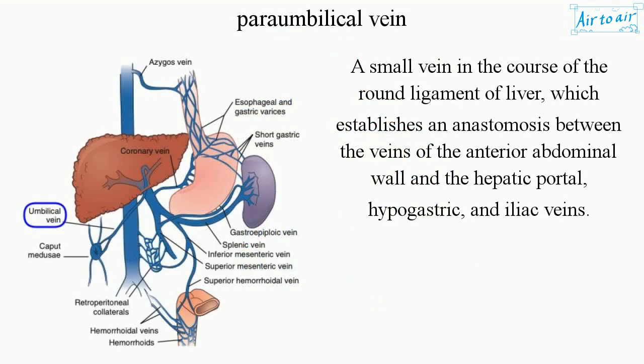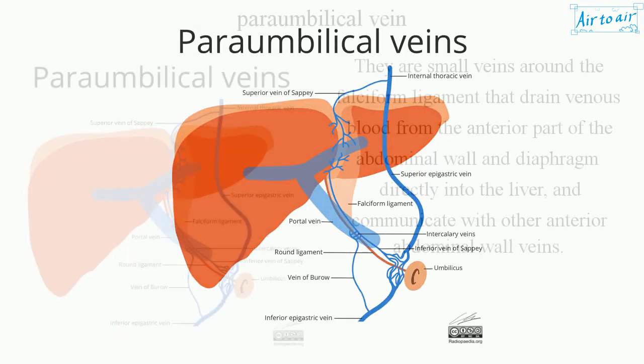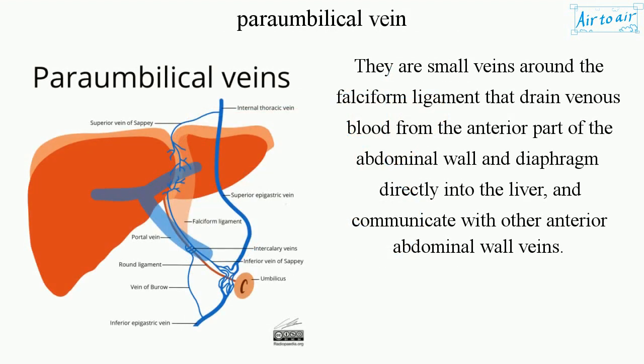Paraumbilical Vein: A small vein in the course of the round ligament of liver, which establishes an anastomosis between the veins of the anterior abdominal wall and the hepatic portal, hypogastric, and iliac veins. They are small veins around the falciform ligament that drain venous blood from the anterior part of the abdominal wall and diaphragm directly into the liver, and communicate with other anterior abdominal wall veins.